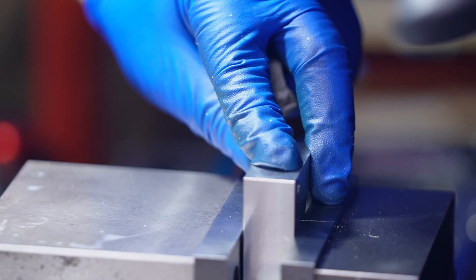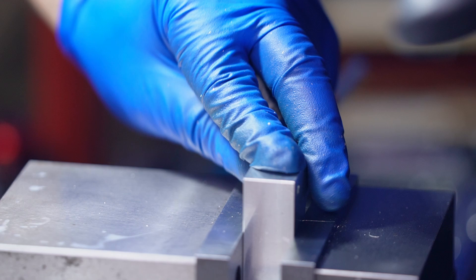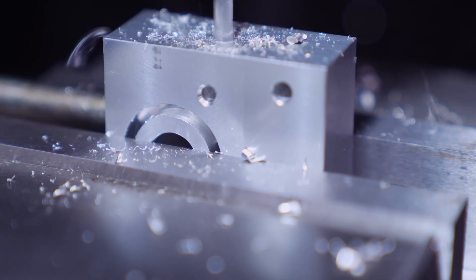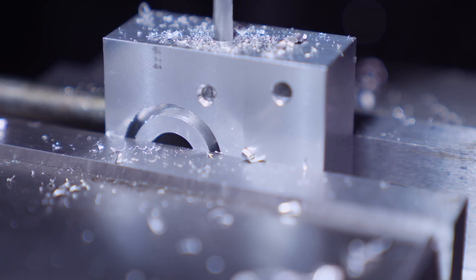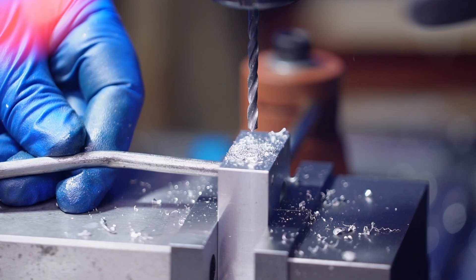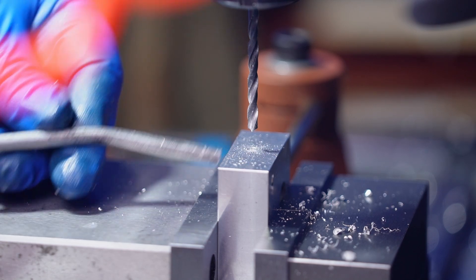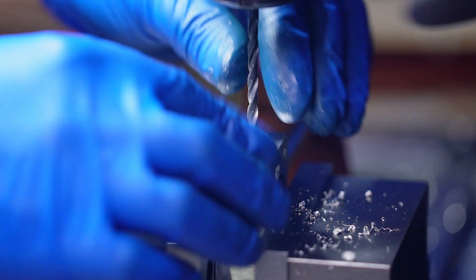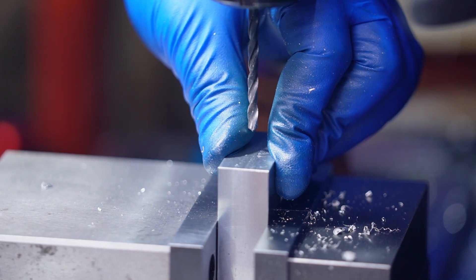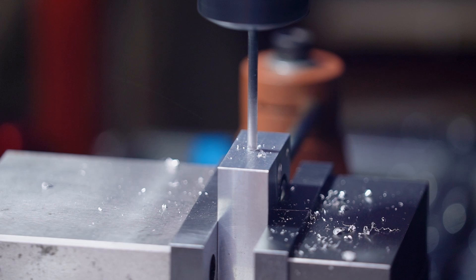The fourth step requires two separate clamping setups. I first machined the hole on one side, which connects to the outlet port on the end face. Then, I reclamped the workpiece to machine the hole on the other side, which connects to the inlet port on the end face.